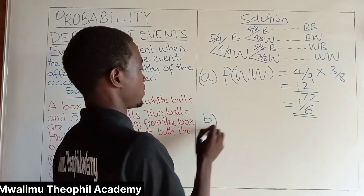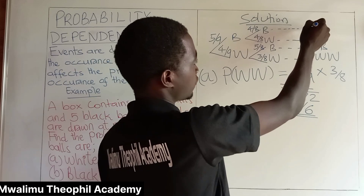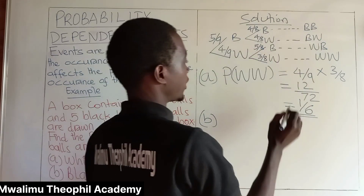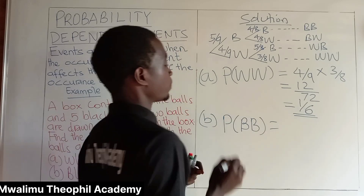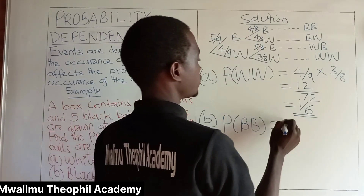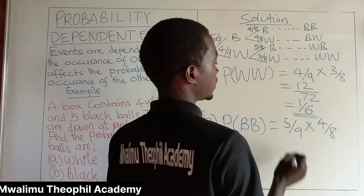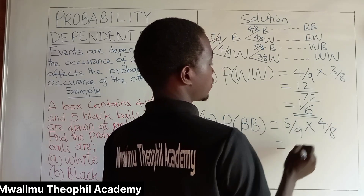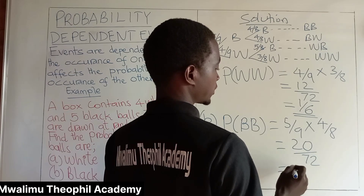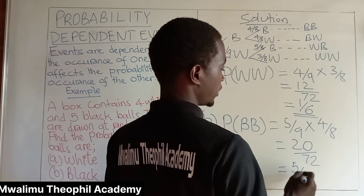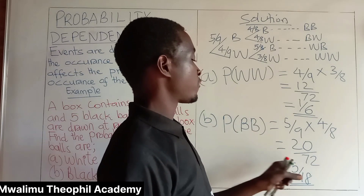Let us see Part B: to draw both two balls black. This line is considered where we have obtained black, black. The probability of black, black will be equal to: the first black is five over nine, times the second black which is four over eight. This will be equal to five times four, which is twenty, over nine times eight, which is seventy-two. If we simplify this by four, we get five over eighteen. So the probability that both two balls drawn are black will be five over eighteen.